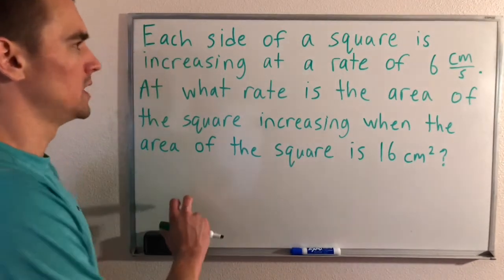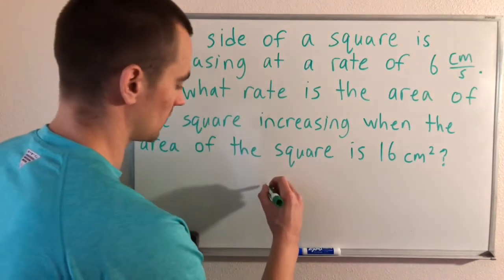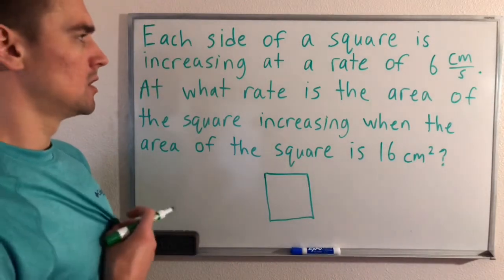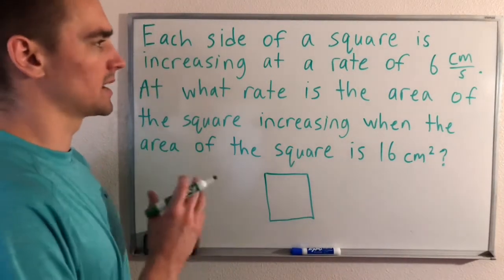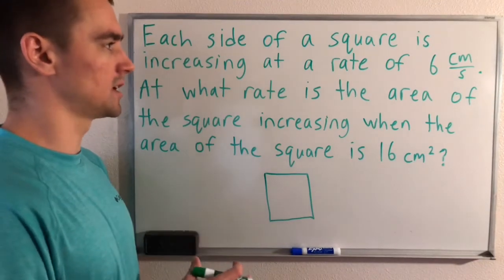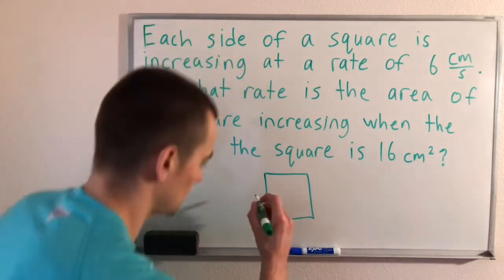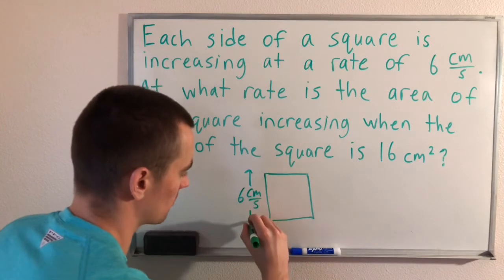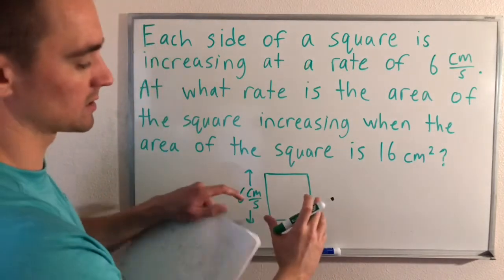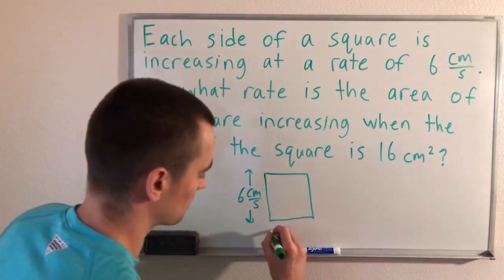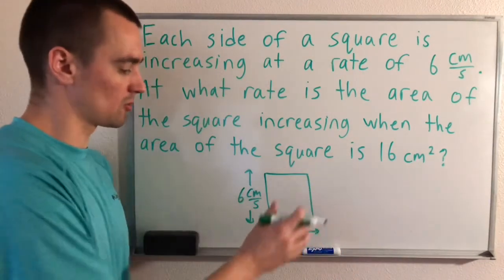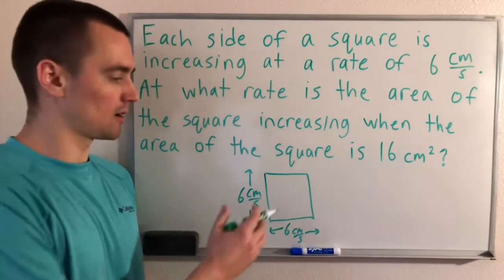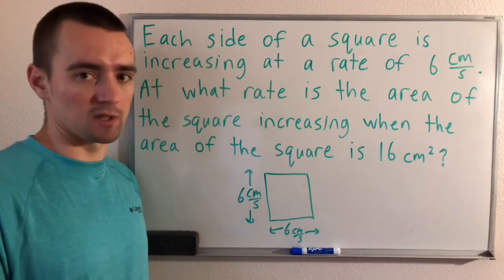We know that we're dealing with a square here, so let's start with that. We also know that the sides of the square are increasing at a rate of 6 centimeters per second — basically each of these sides is increasing at 6 centimeters per second, so they're all going to be growing. Our square is going to kind of expand outward in every direction, so all four sides are going to be growing at 6 centimeters per second.